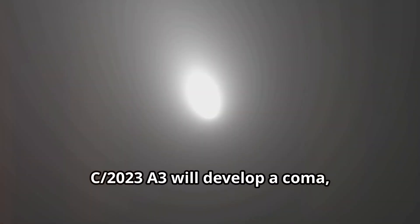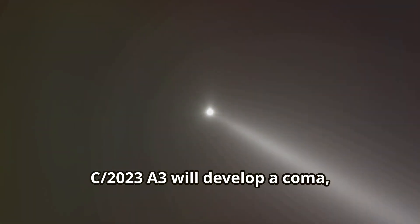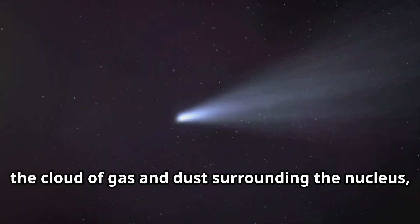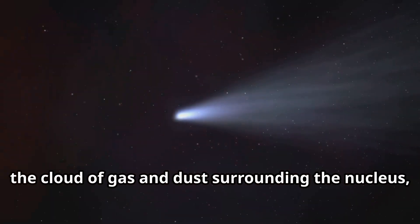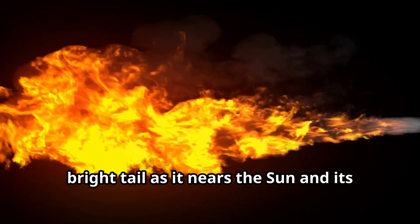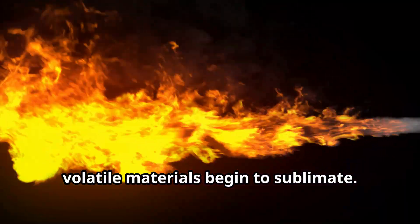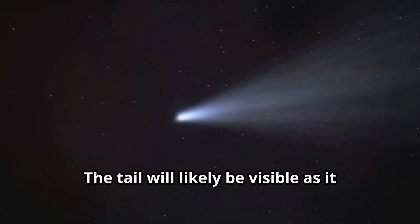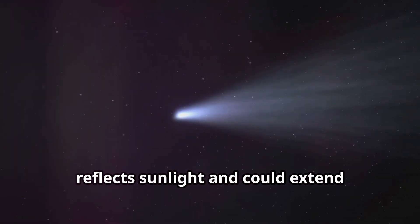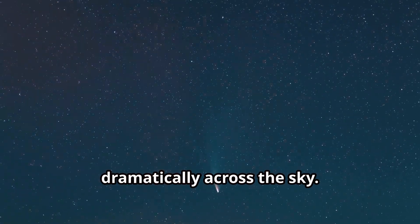Like all comets, C/2023 A3 will develop a coma, the cloud of gas and dust surrounding the nucleus, and possibly a long, bright tail as it nears the Sun and its volatile materials begin to sublimate. The tail will likely be visible as it reflects sunlight and could extend dramatically across the sky.